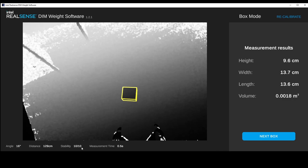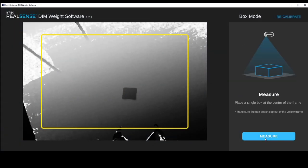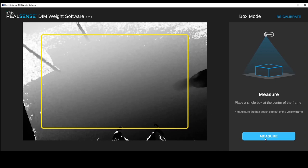We report this confidence measure so that if you see low confidence values, you know there may be something in the scene to troubleshoot. Because DWS uses the L515, which is an IR-based camera, it's important that ambient sunlight is kept to a minimum. Some objects reflect IR and some absorb IR, so we recommend limiting ambient sunlight and avoiding materials such as shiny black plastic, which can cause interference with the depth map. You can measure another box by clicking the Next Box button, putting a new box into the scene, and clicking Measure again.